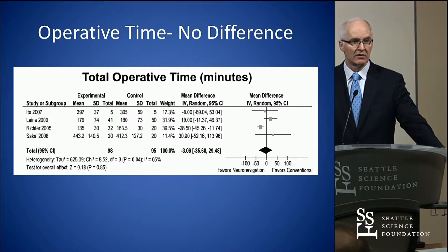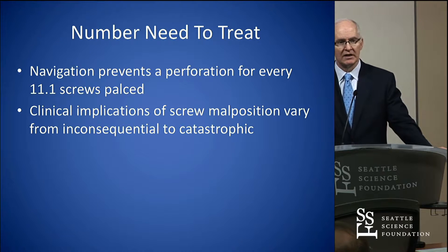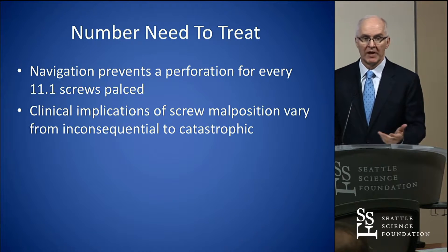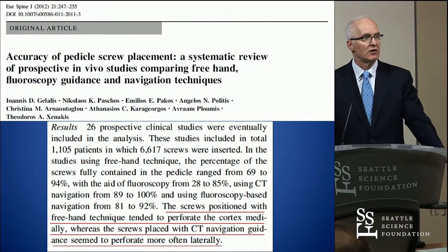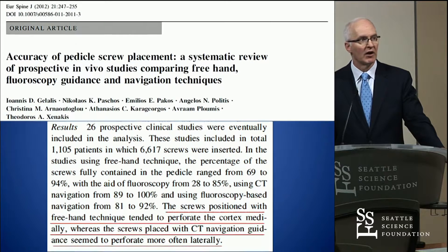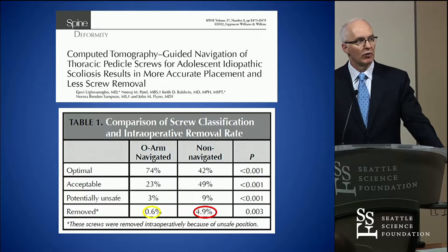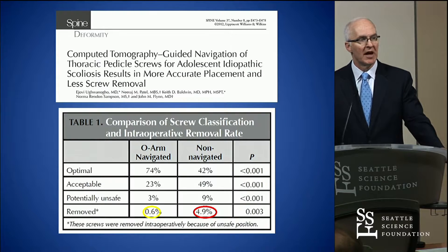Regarding operative time, meta-analyses to date haven't been able to show a difference. Blood loss is maybe slightly less with navigation. The key take-home message on number needed to treat: you only have to put in 11 pedicle screws to miss one and need a potential revision. The malpositions range from no big deal to catastrophic. Additionally, screws positioned freehand tend to perforate the cortex medially, whereas navigation seems to err more laterally. A study out of CHOP found a profound difference in malpositioned screws between surgeons who used navigation and those who just did check spins with intraoperative cone-beam CT.